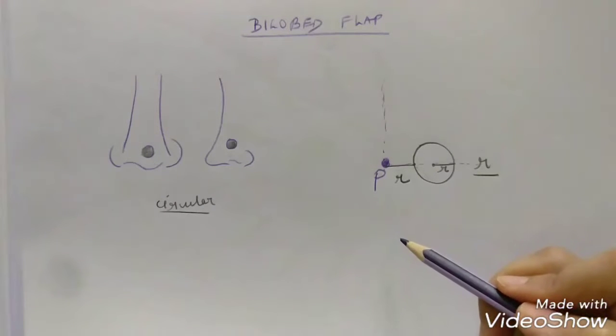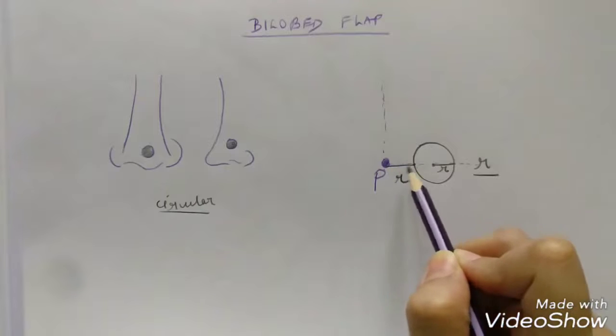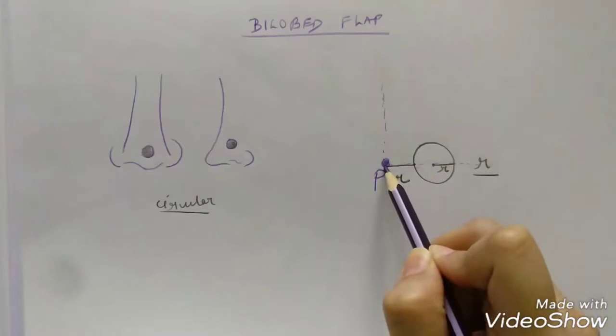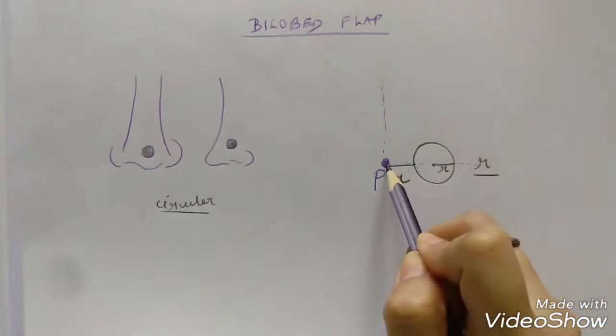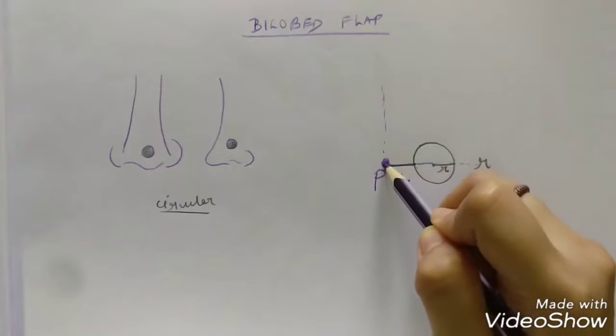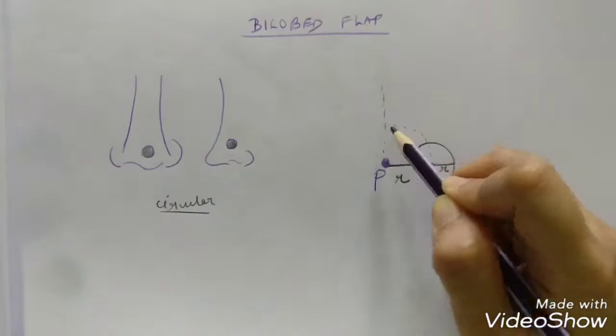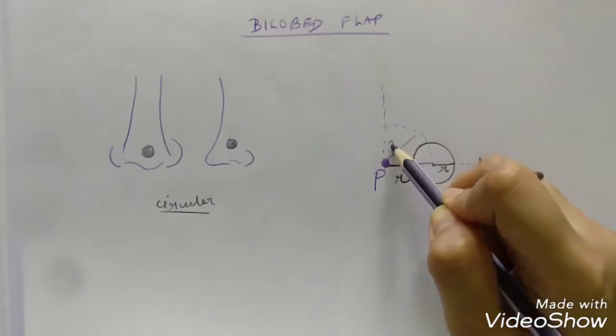To mark the flaps, two concentric circles will be taken into consideration. The first concentric one is drawn at a distance of 2R from the pivot point. So this will be 1R and this is the second R. Keeping the pivot point, the first concentric circle is drawn at a distance of 2R.